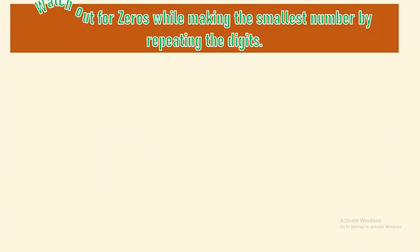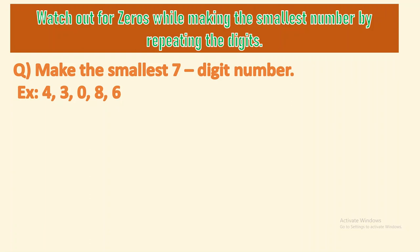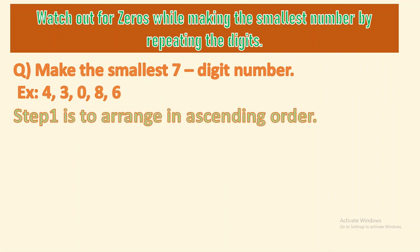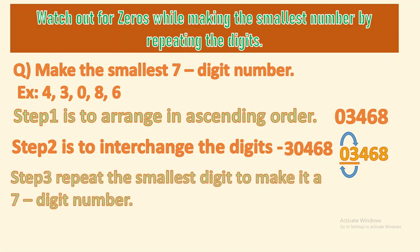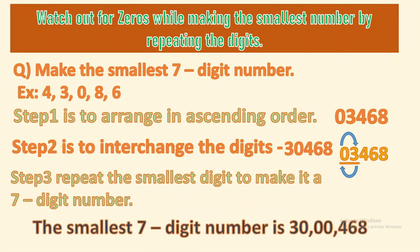Now let's watch out for zeros while making the smallest number by repeating digits. The digits given are 4, 3, 0, 8, and 6 — only five digits, and we need a seven digit number. Step one: arrange in ascending order — 0, 3, 4, 6, 8. We cannot place 0 first, so interchange: 3 comes first, then 0 — giving 30,468. Still not seven digits, so we repeat the smallest digit, 0, making the answer 30,4680 — wait, it becomes 30,468 with an extra zero.